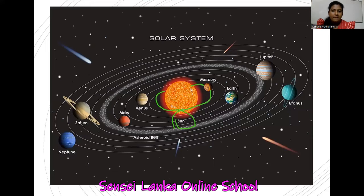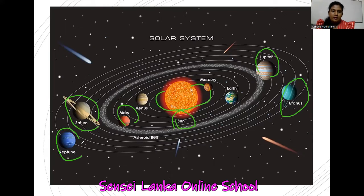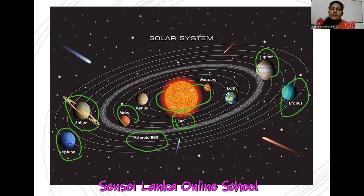Mercury, Venus, Earth, Mars, Jupiter, Saturn, Uranus, Neptune — these are the planets going around the Sun. And there is also the asteroid belt. In this lesson we are going to learn about them one by one. We can learn a lot of things, and sometimes the planets will come to meet you and speak with you — so stay with me and I will come with these friends in the future.